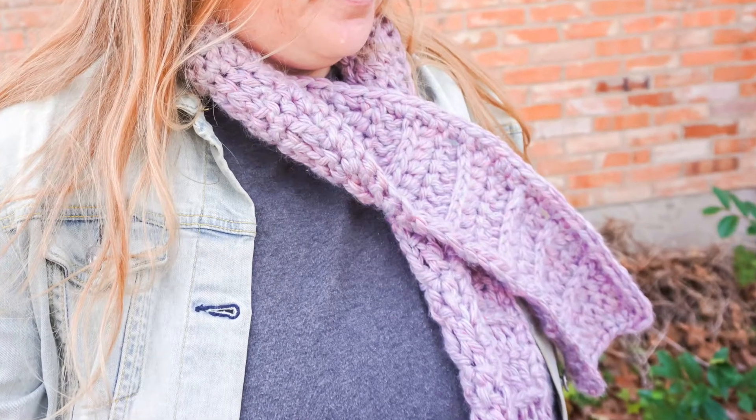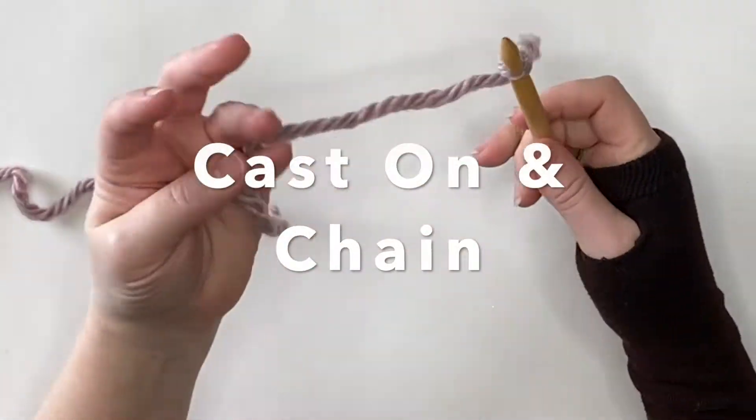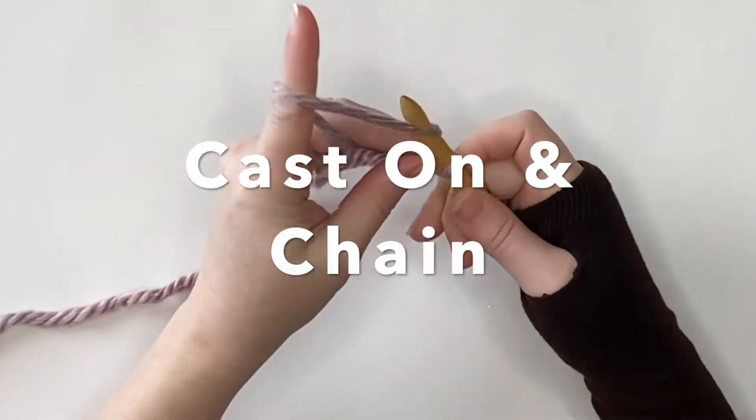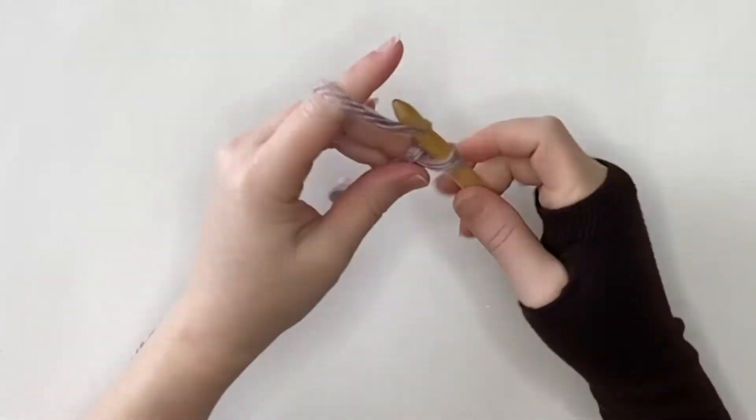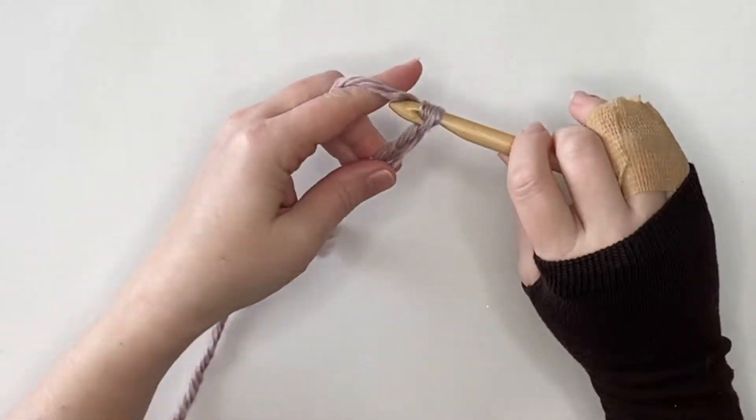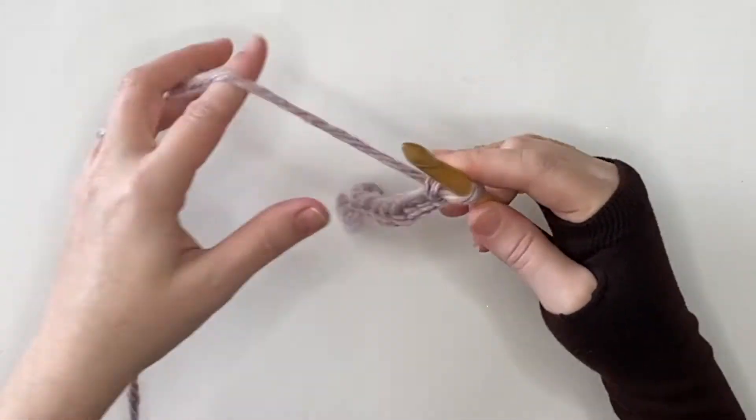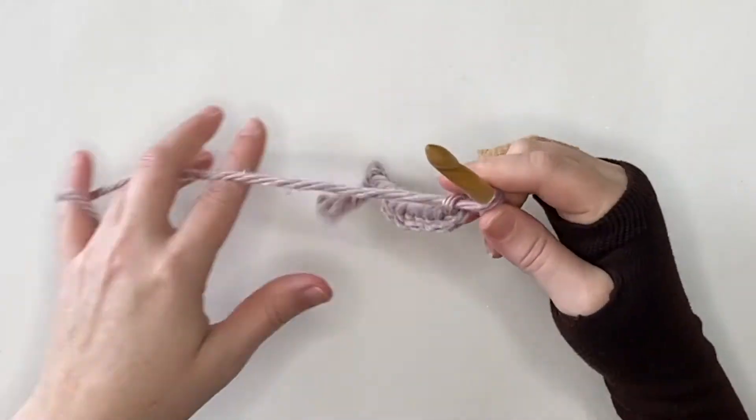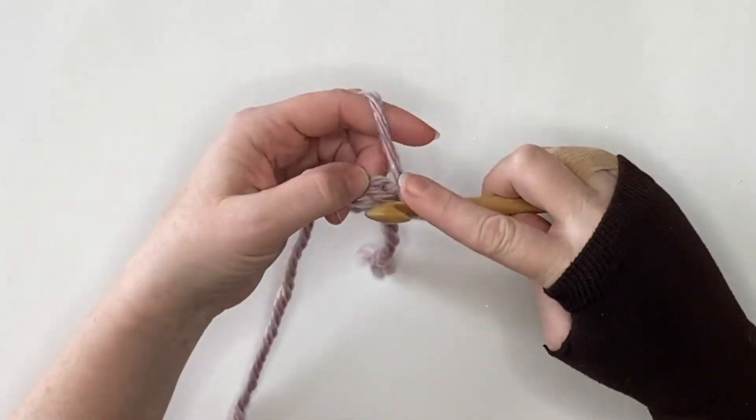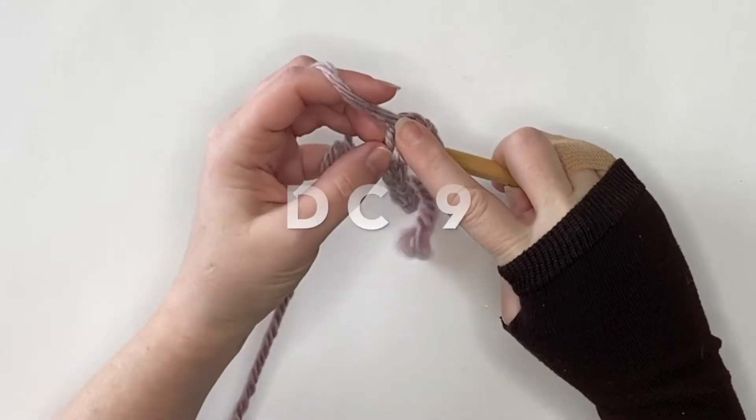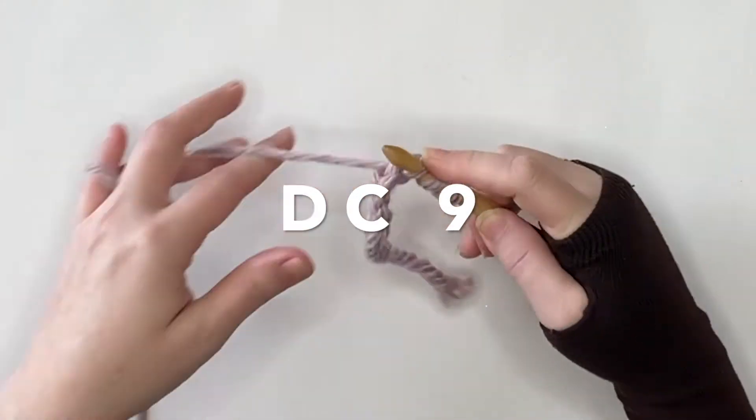Hello, today we're going to make this beautiful chunky scarf that is so fast and simple. First off, we're going to chain 11. Now you might be saying, wow, that's really bulky yarn and it's probably stiff. Let me tell you, it is not, and it is the most amazing yarn. It is made out of recycled water bottles and it is so soft, it's crazy. Once you get your chains done...